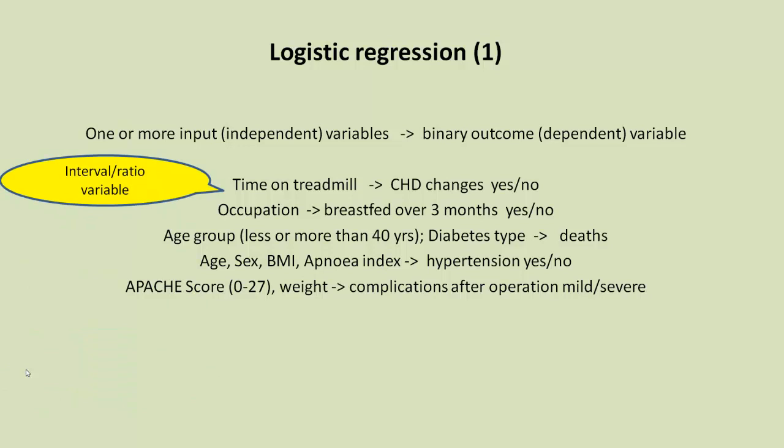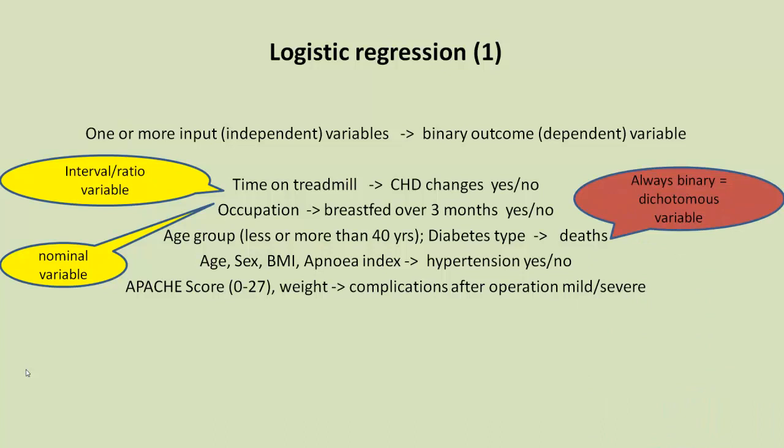So the important thing to realize is that the input variables can be interval or ratio or nominal, and they can be ordinal. Campbell discusses this situation in the chapter very clearly. But let's just stick with the interval ratio and the nominal variables. And the important thing is the outcome variable, the dependent variable, is always a binary variable. That is, it can take one of two values: yes or no, dead or alive, mild or severe, present or absent, etc. When we have a variable that can take two values, it's also called a dichotomous variable, or a binary variable.